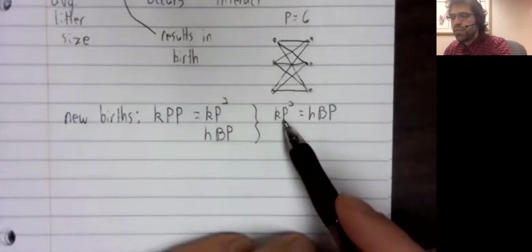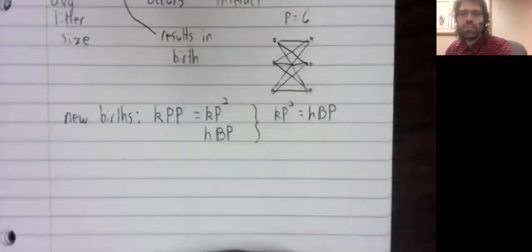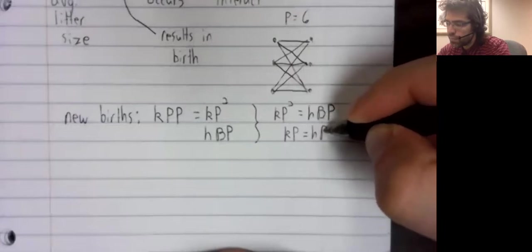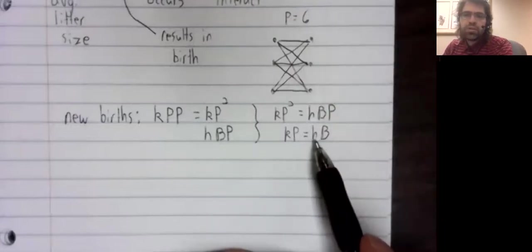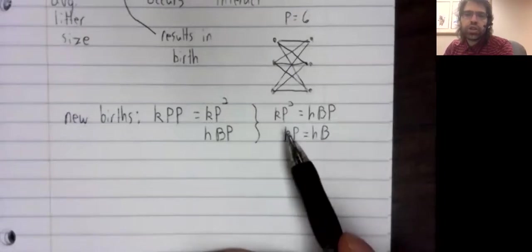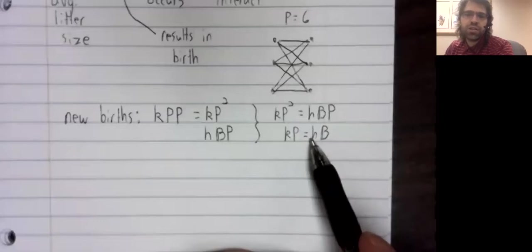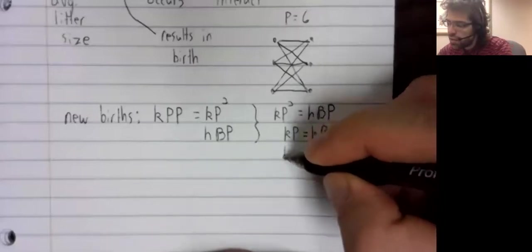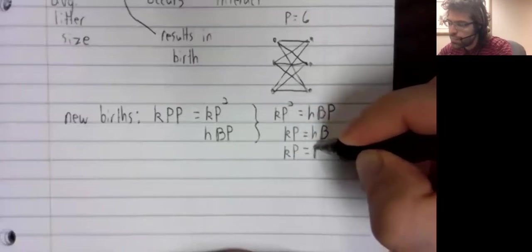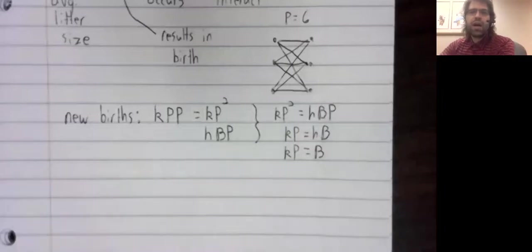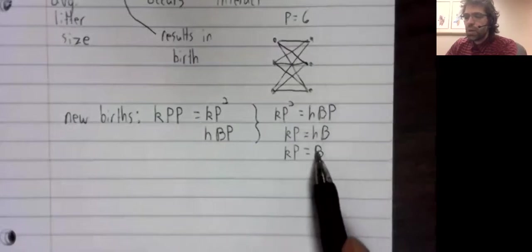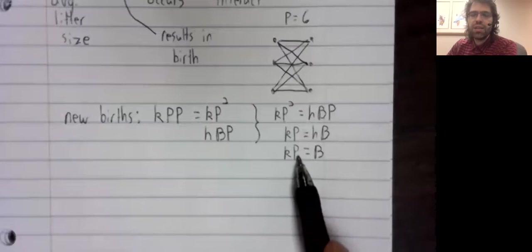And we'll divide both sides of this equality by p. And a constant divided by a constant is still a constant. We'll just absorb this h into this k. And we find that if we view births as a totally random event, the birth rate should be about k p.